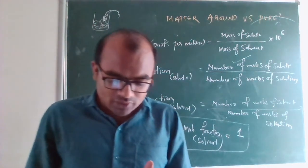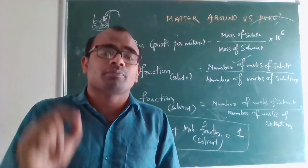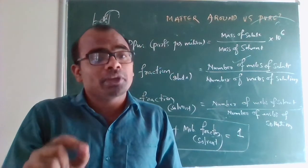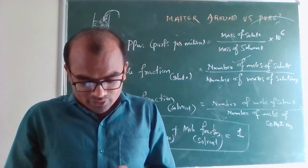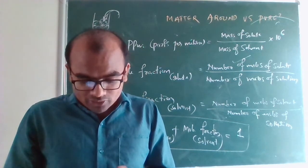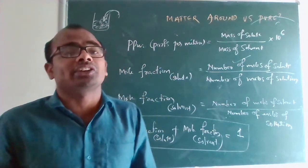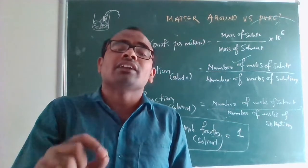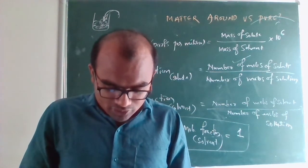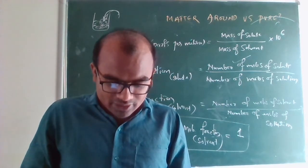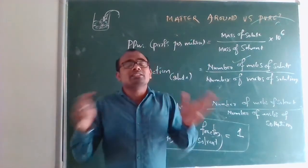We can see the path of light through the particles of a suspension — the suspension scatters the beam of light. The path of light is not visible through a solution; the particles of a solution do not scatter light. But the particles of a suspension do scatter the beam of light passing through it. The particles of suspension tend to settle down when left undisturbed, and they can be separated using filtration.